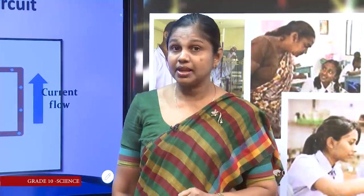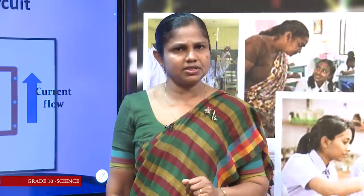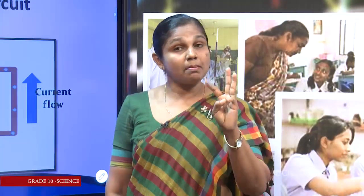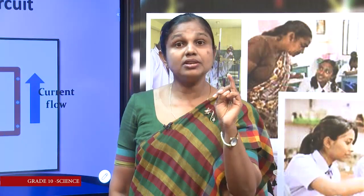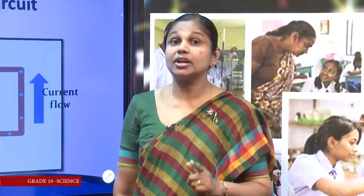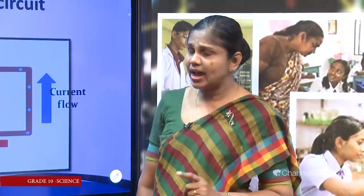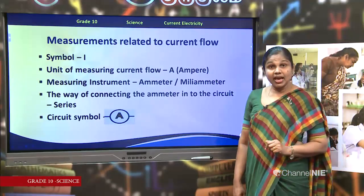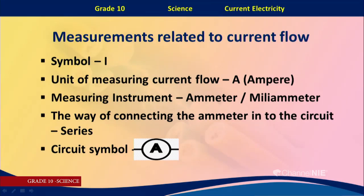Children, you have learned about measurements of electricity in Grade 8. There are three main measurements: number one, current flow; number two, potential difference; and number three, resistance. Current flow is symbolized by capital I, and the unit of measurement is the ampere. There are subunits of ampere called milliampere and microampere. The measuring instrument is the ammeter or milliammeter.